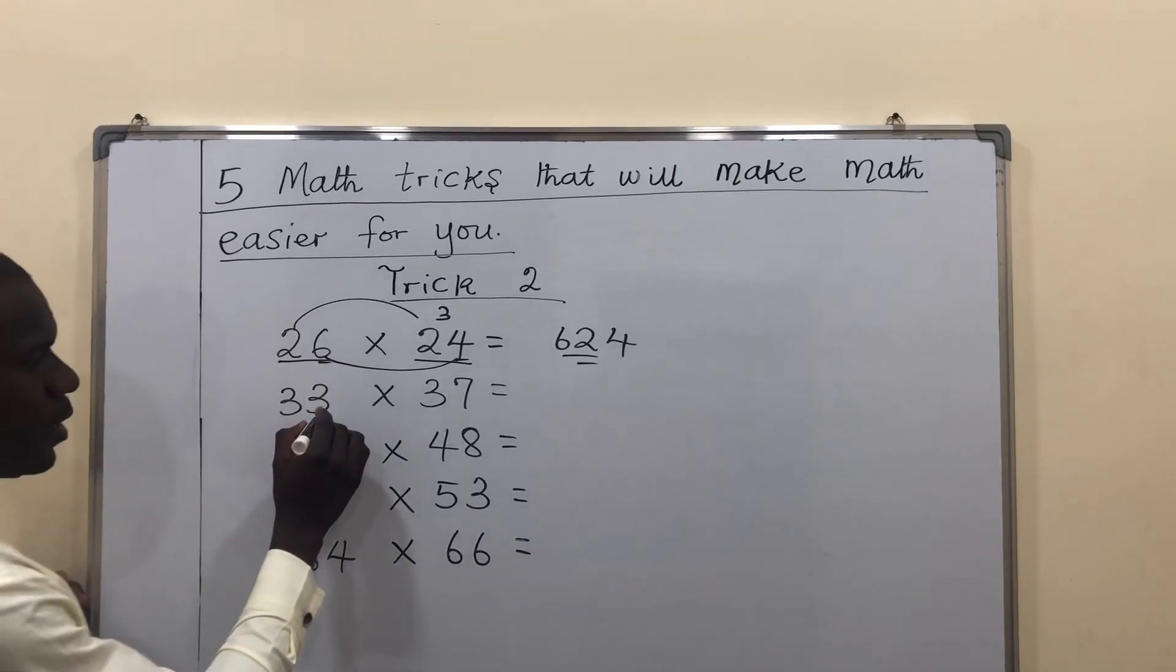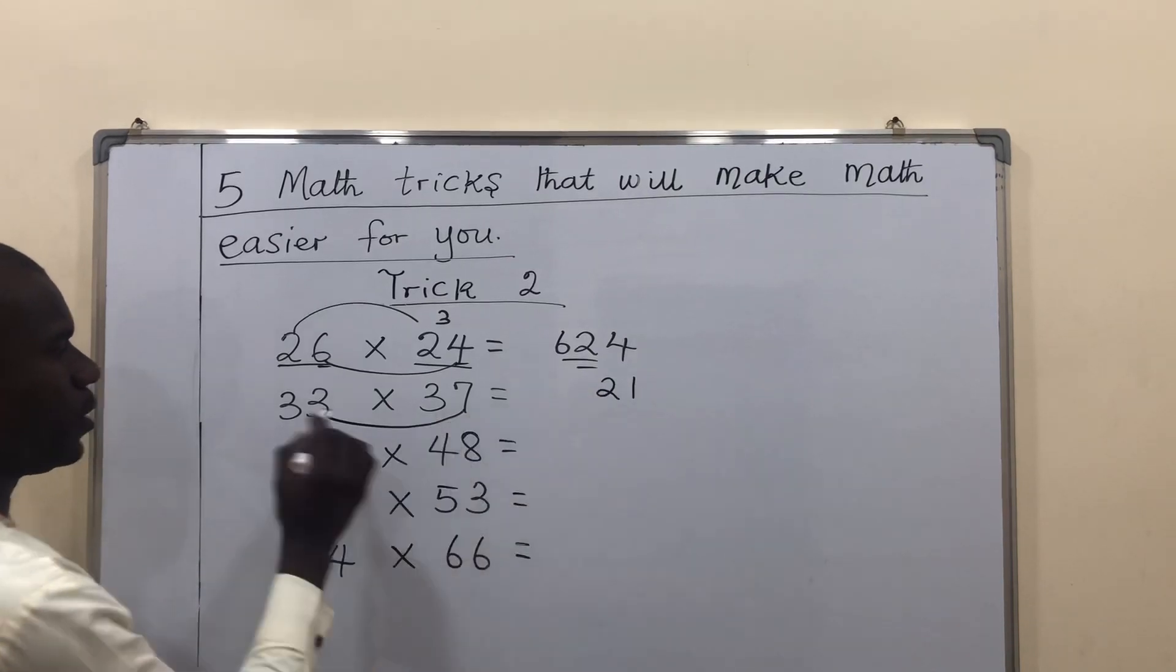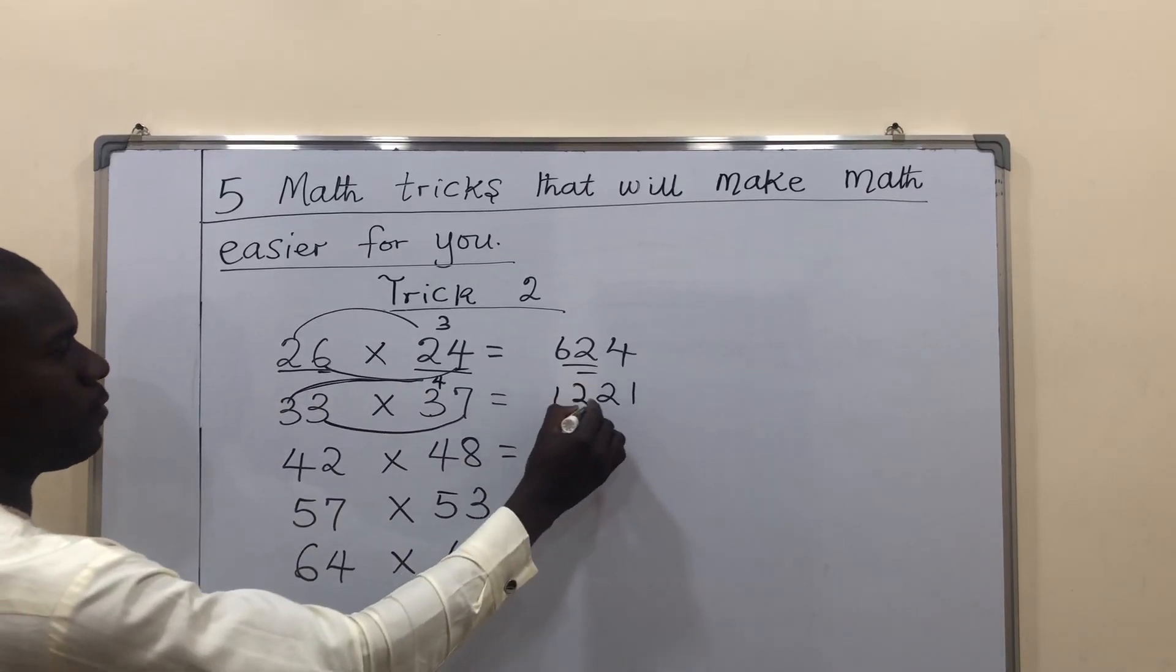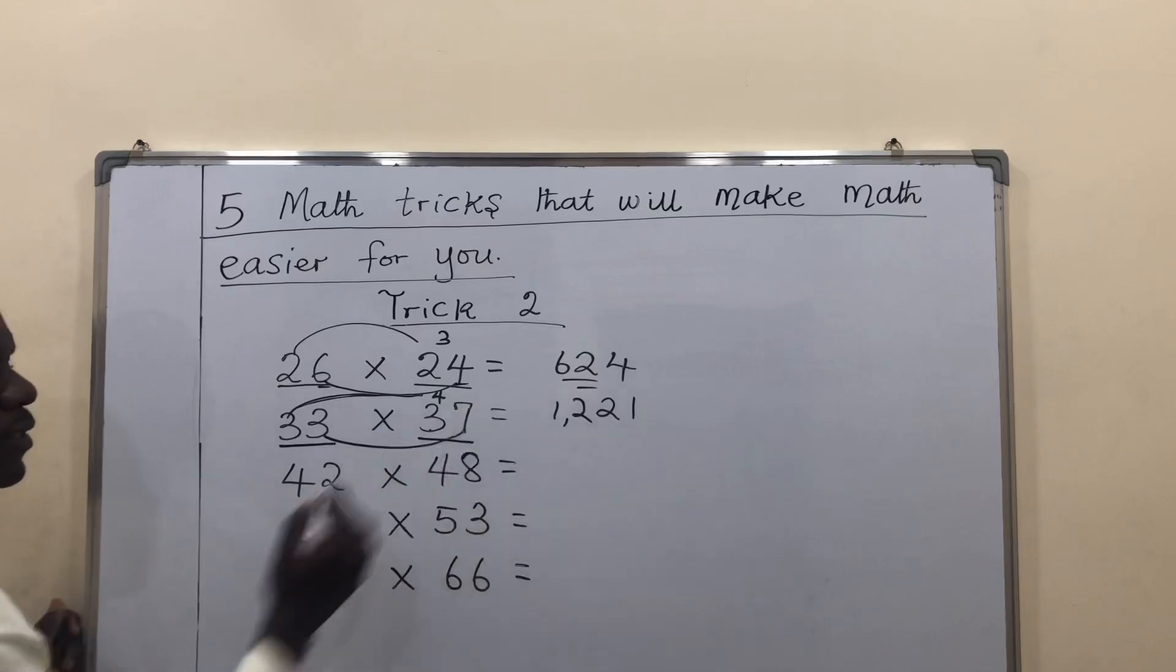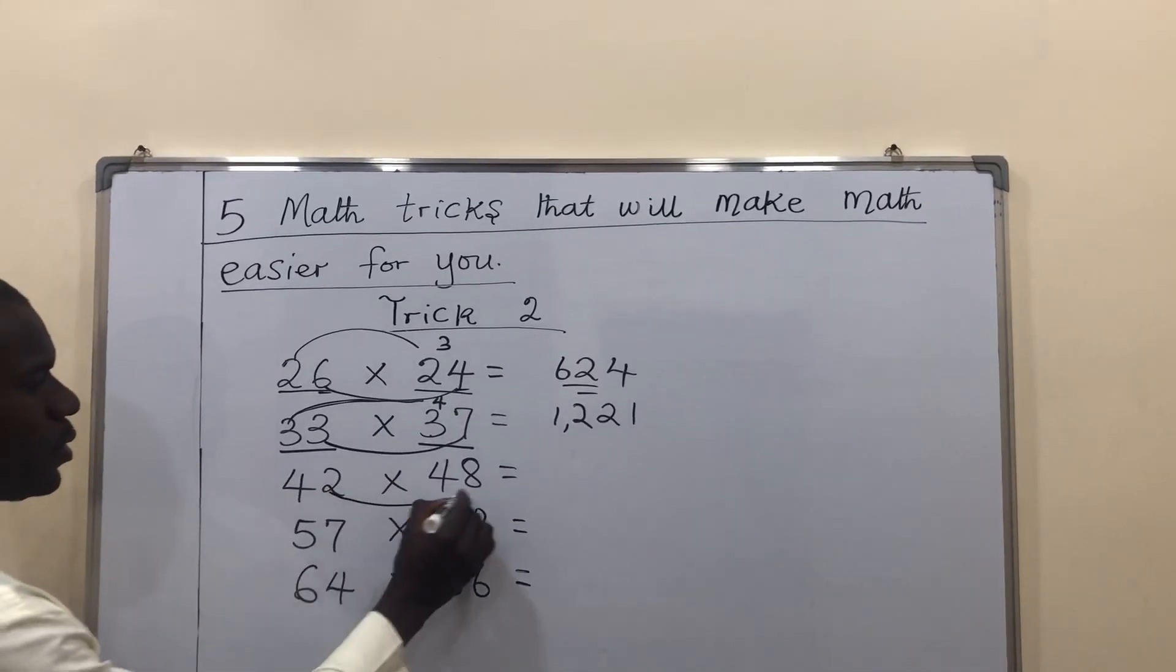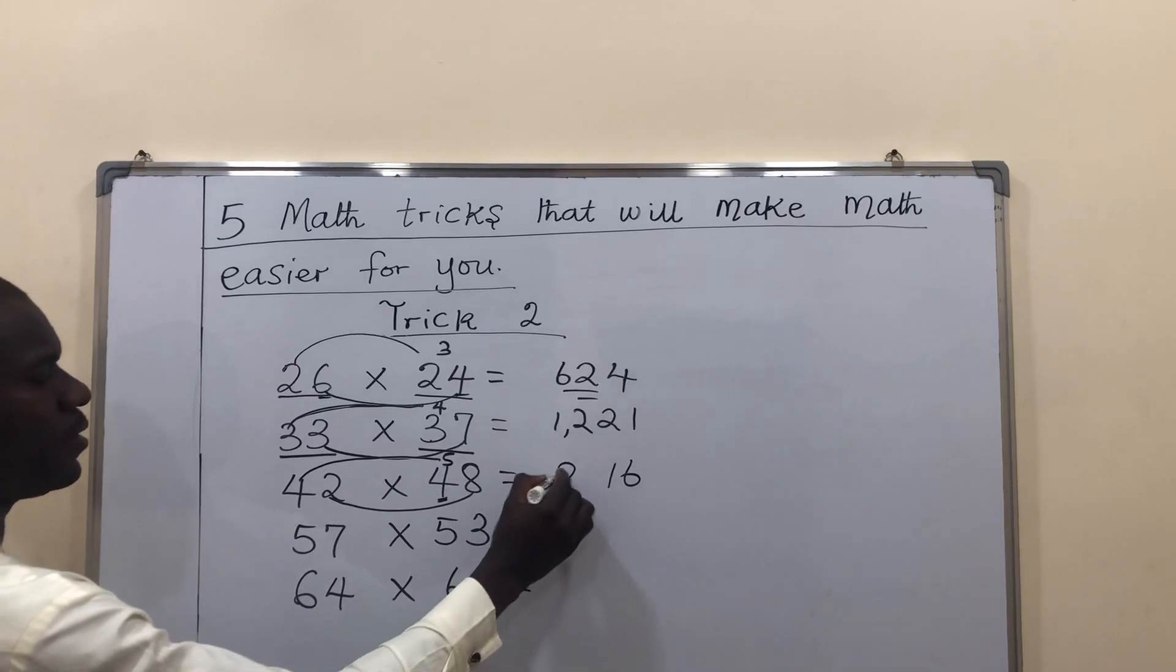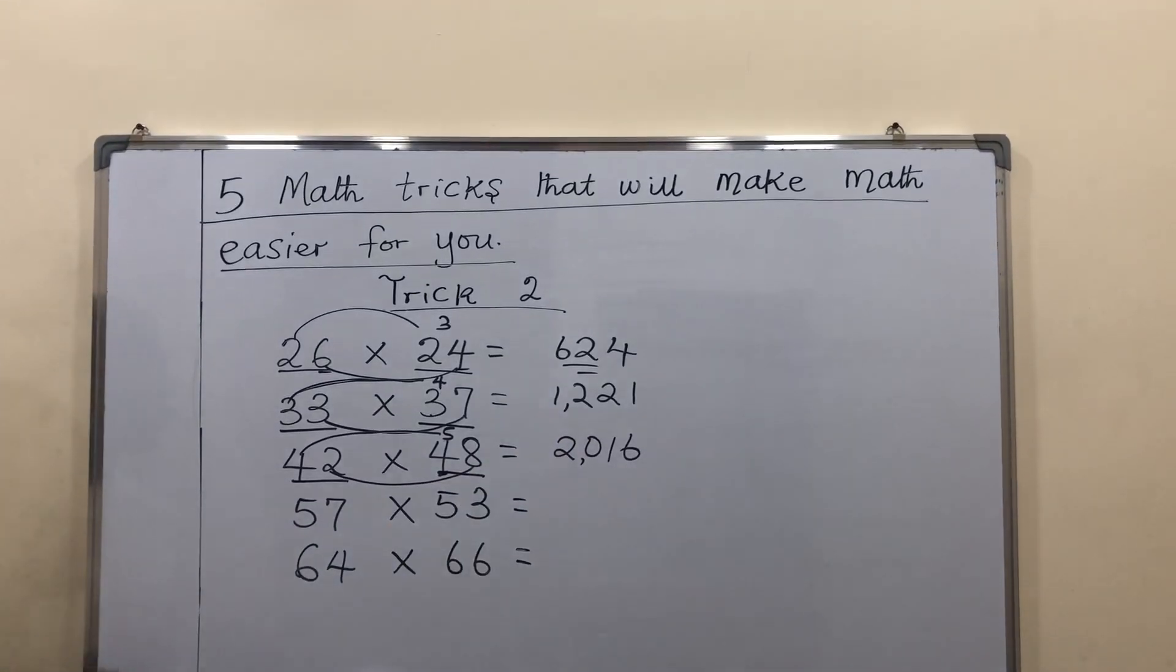To the next one, multiply the units together. 3 times 7 will give me 21. Over to the next one, after 3, what comes next? 4. 3 times 4 is 12. 33 times 37 will give me 1,221. The third one, the units 2 times 8 is 16. After 4, what comes next? 5. 4 times 5 is 20. 42 times 48 will give me 2016.